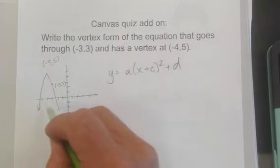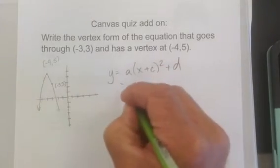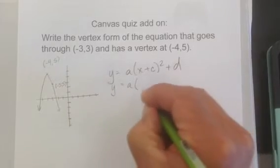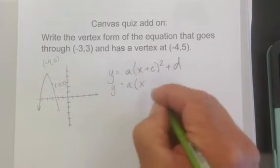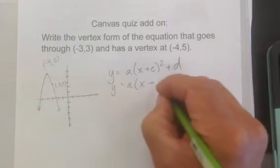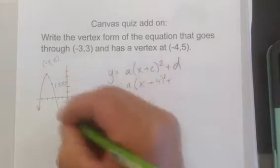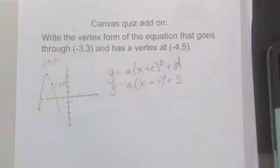Because I know it went left and it went up. So y equals a x, left is a plus value, went left 4. And then d is an up value, it went up 5.